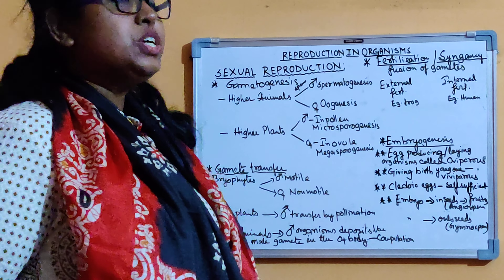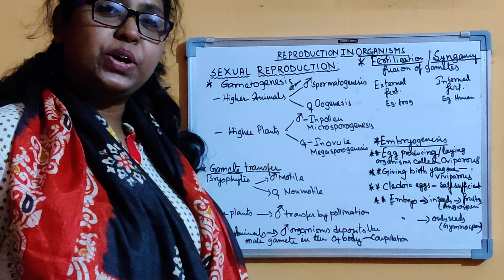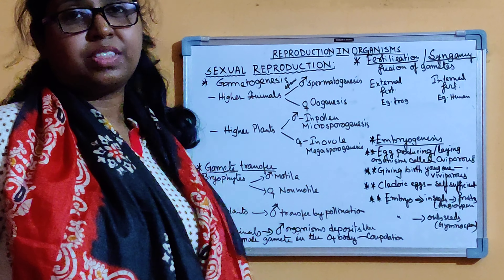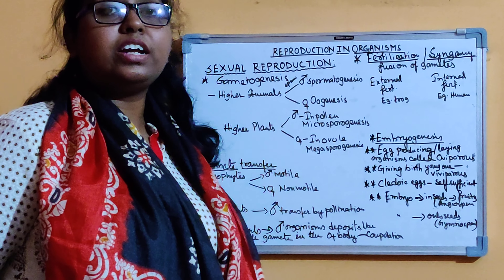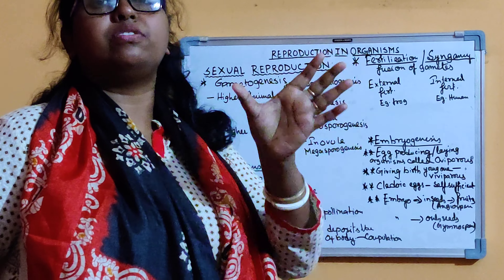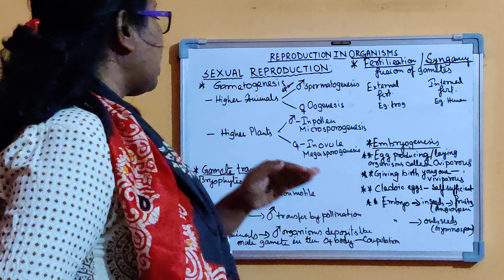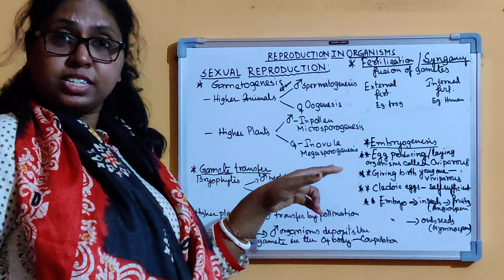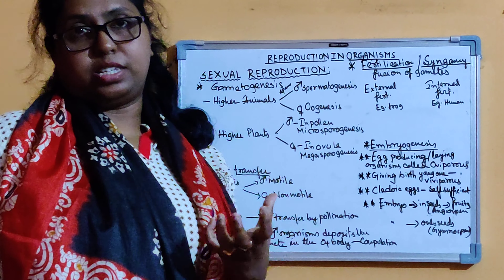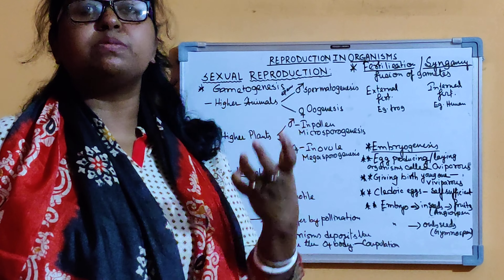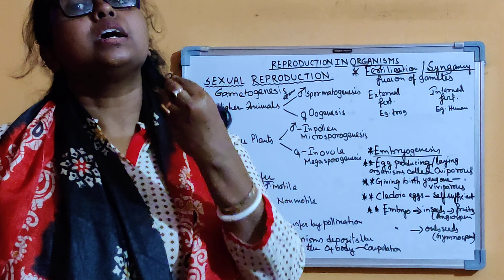Good morning students. Today's video is about another part of sexual reproduction. We had already discussed the different parts of the sexuality of the living organism. Today we will discuss gametogenesis. So what is gametogenesis? Gametogenesis is the process by which sex organs produce gametes.